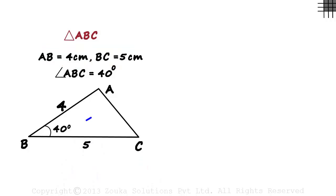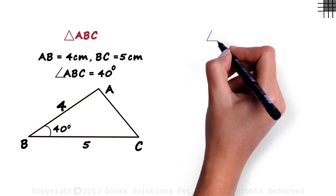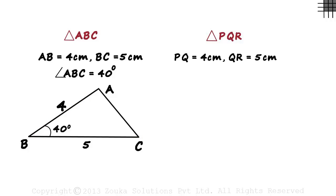Note that the angle is included between the two sides. And if we have triangle PQR with PQ equal to 4 centimeters and QR equal to 5 centimeters and angle PQR equal to 40 degrees, then the triangle formed will be exactly like triangle ABC.